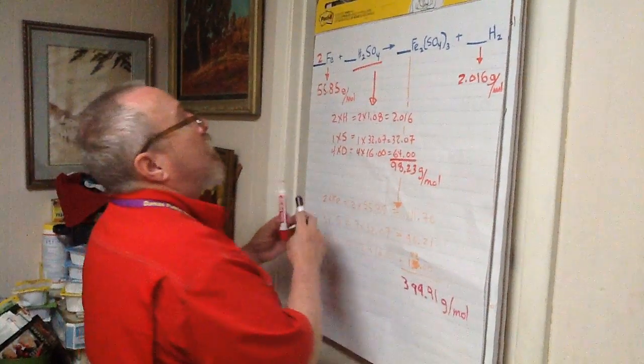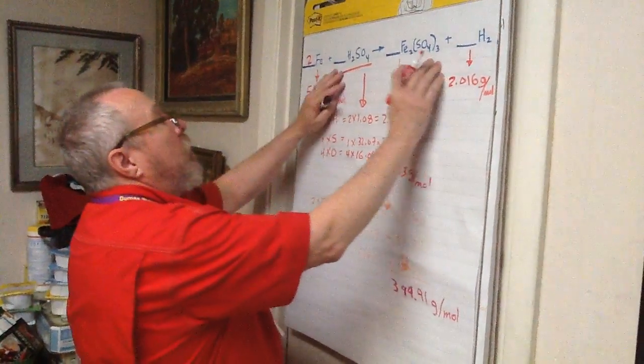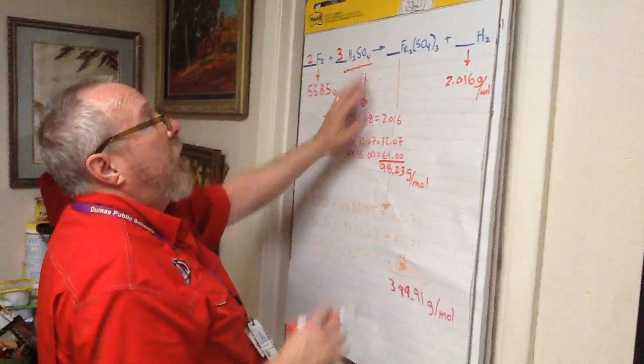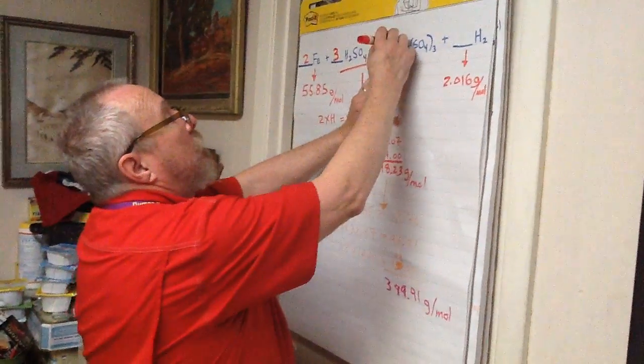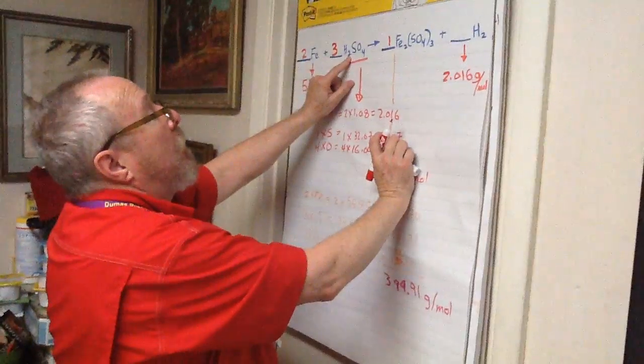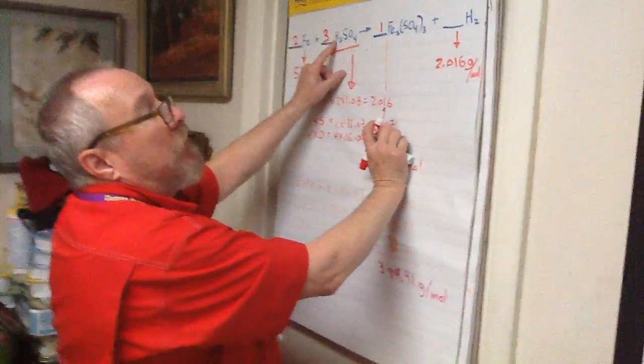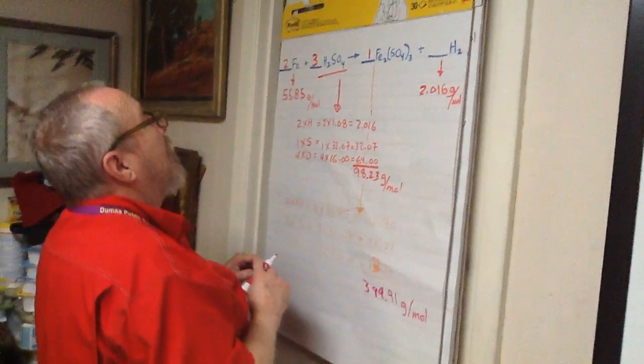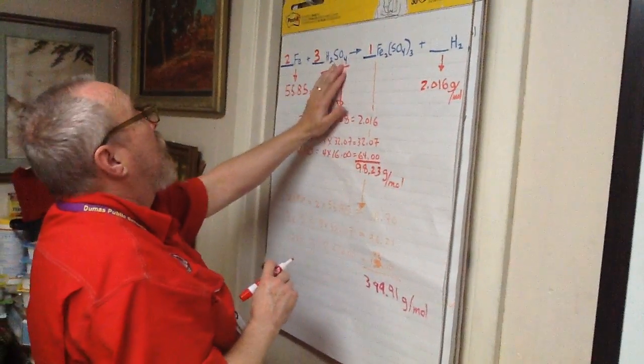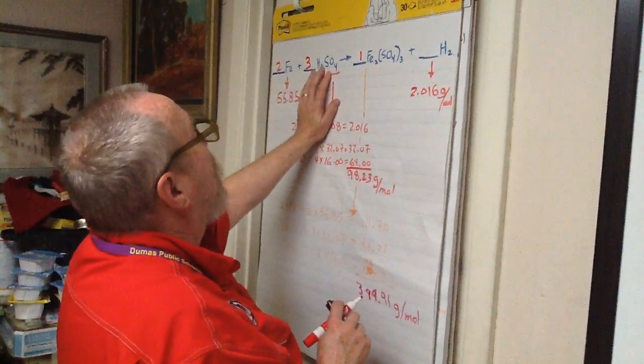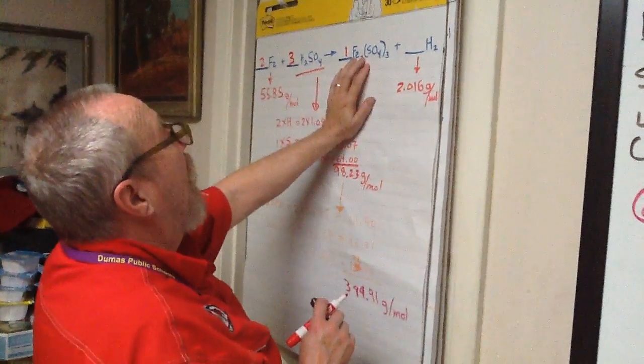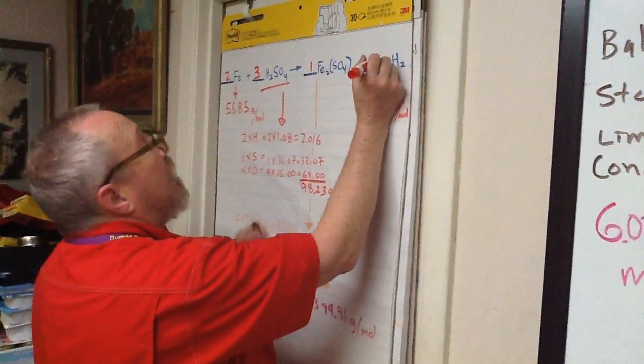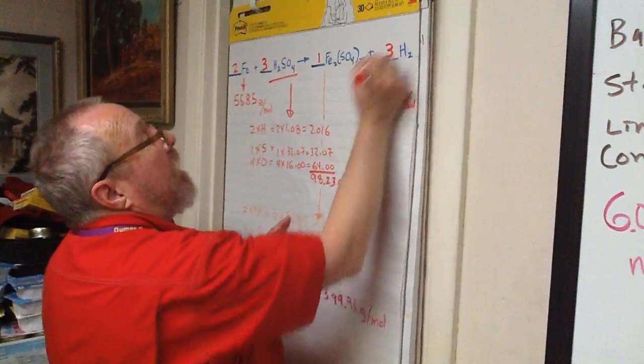But I knew that I need 3 of these sulfates, so let me try 3 of those sulfuric acids. Now that would result in 1 of these, but look what I have. I have 6 hydrogen atoms, but it wouldn't be 6, would it? I have 3 sulfates here, so this is going to need 2 irons. I need 3 of those sulfates, and that will give me 3 H2s.